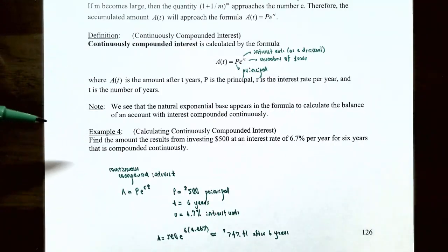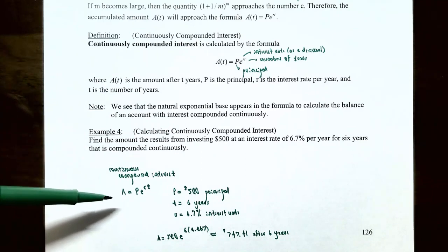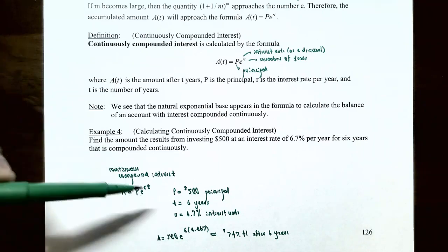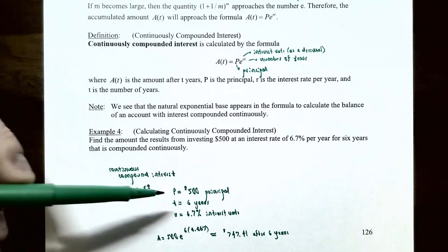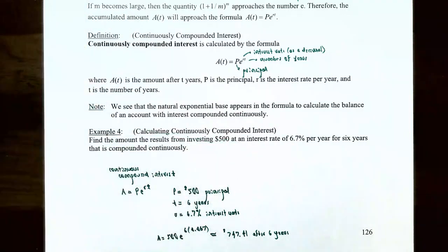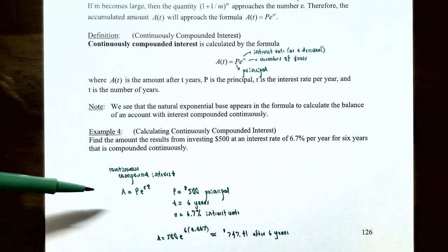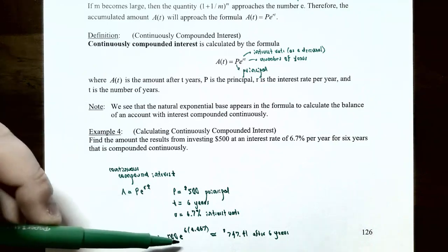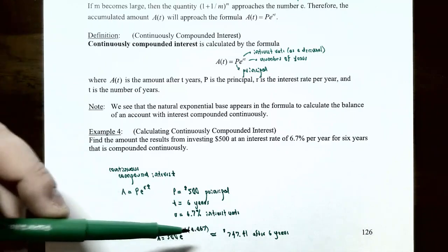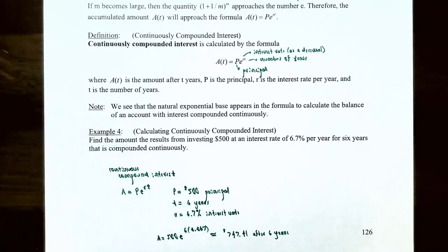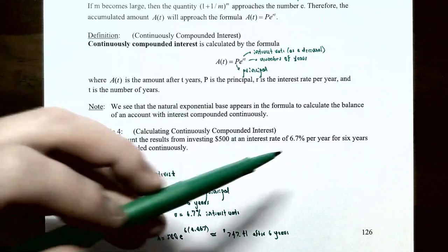In Example 4, we find the amount resulting from investing $500 at 6.7% per year compounded continuously for 6 years. Using A = Pe^(rt) with P = 500, r = 0.067, and t = 6: A = 500·e^(6 × 0.067). Entering this into a calculator gives a balance of approximately $747.41 after six years.